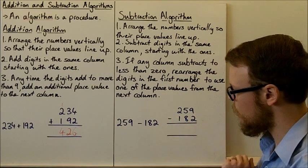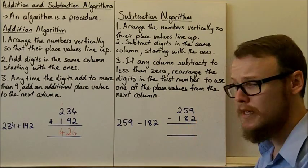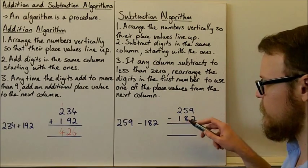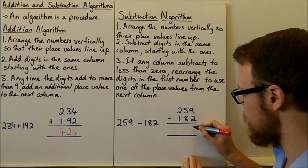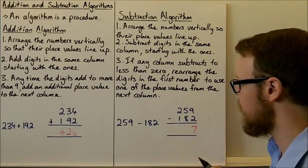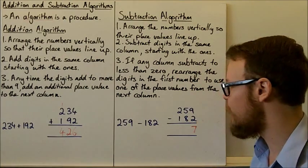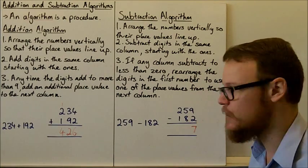So here we've got an example here, 259 minus 182. So firstly, once again, I've arranged them so that their place values line up. We're going to start with the ones. 9 subtract 2 is going to be 7. Now I've got 5 subtract 8. That's going to be less than 0. So what I need to do is I need to rearrange my number.